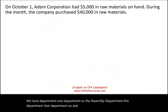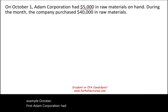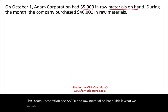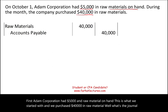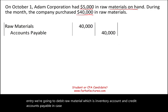Now let's start by looking at an example. October 1st, Adam Corporation had $5,000 in raw material on hand. They purchased $40,000 in raw material. The journal entry is to debit raw material — which is an inventory account — and credit accounts payable, since it was purchased on account.